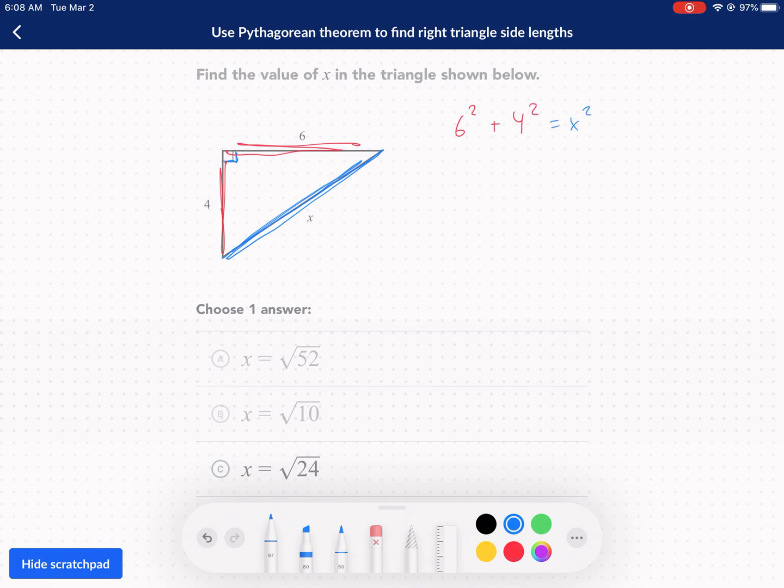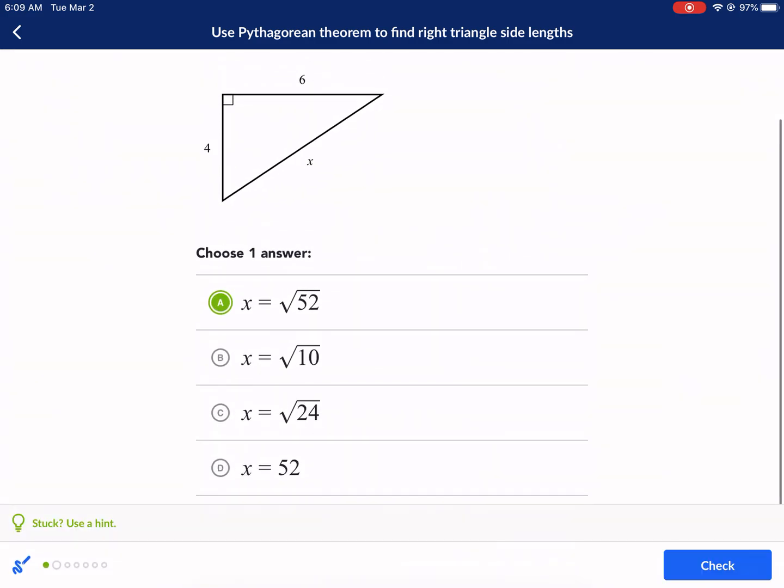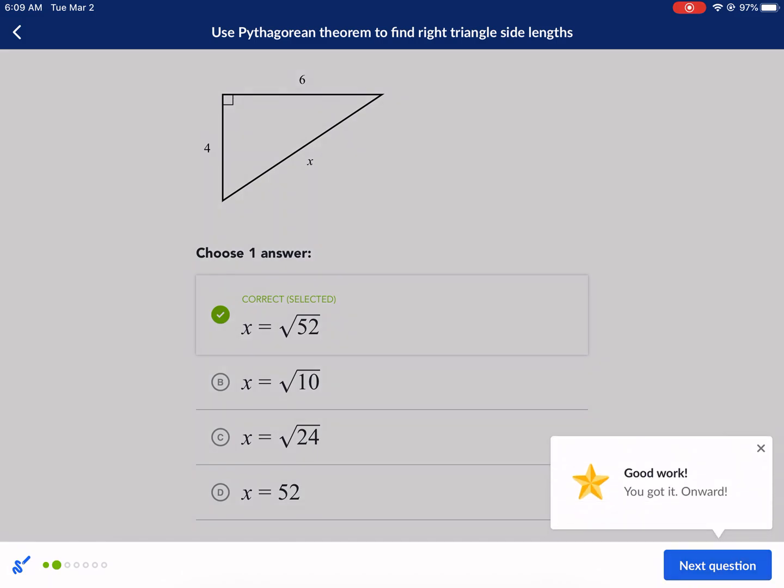So we just need to add 36 plus 16, and that's going to give us 52. So 52 is equal to x squared. We need to take the square root of both sides. To undo the square, we get x equals the square root of 52, letter A. Check it. Next question.